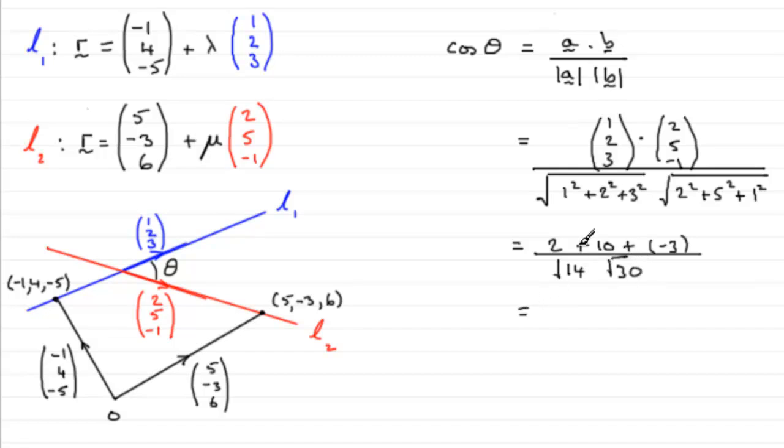So if you do this on your calculator, you'll find you get 0.4391 and so on. And that's the value then of cos theta. So to get theta, we need to take the inverse cos of 0.4391. And if you do that, you'll end up with 63.9500 and so on.